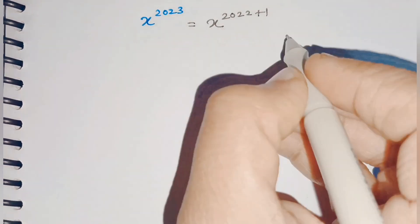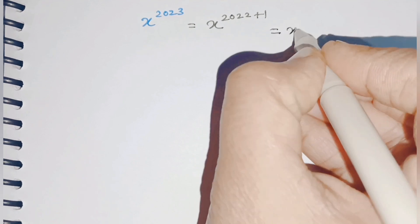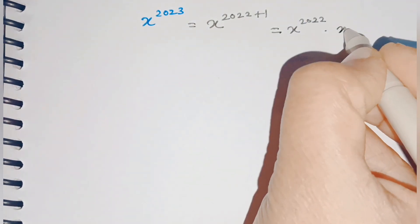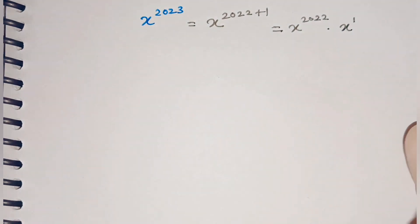By using the product rule, we can write it as x^2022 · x^1. That is, we separated the powers.